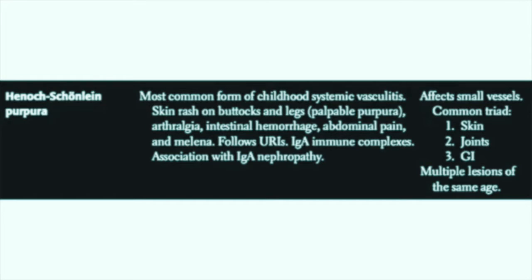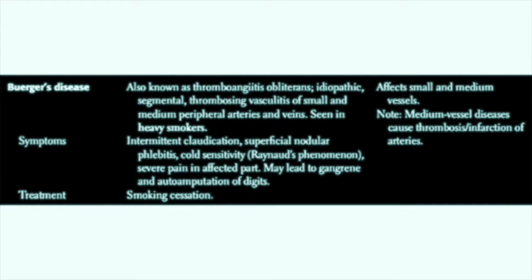Henoch-Schönlein purpura generally follows upper respiratory tract infections. These patients will have immunoglobulin A immune complexes, and it's associated with IgA nephropathy. Buerger's disease, also known as thromboangiitis obliterans, is an idiopathic segmental thrombosing vasculitis of small and medium peripheral arteries and veins. It is classically seen in heavy smokers.